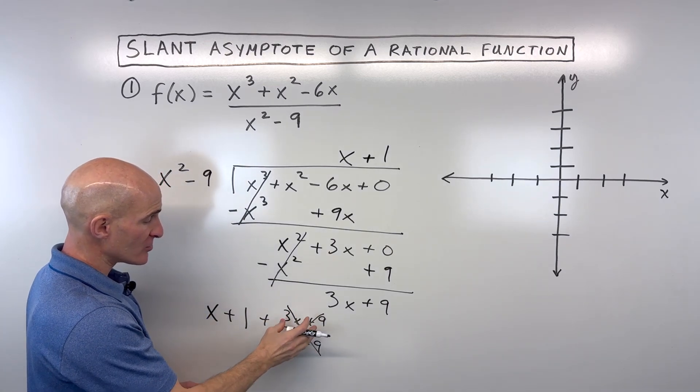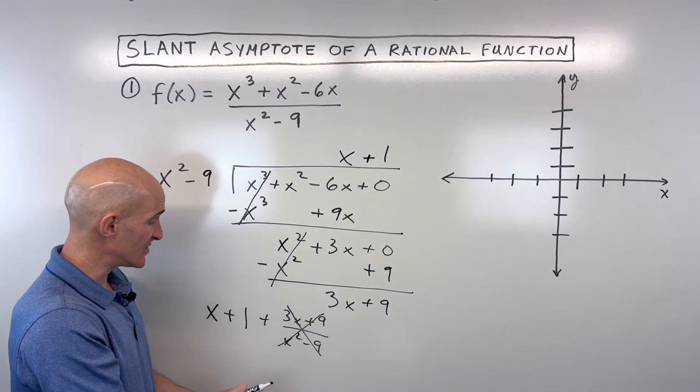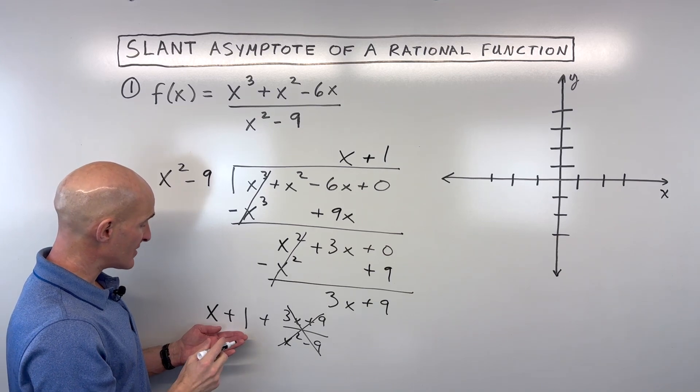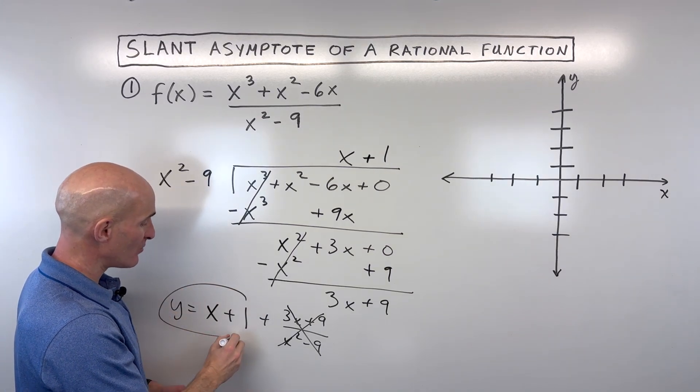because as x gets larger, this term basically goes to 0. So our slant asymptote is y equals x plus 1.